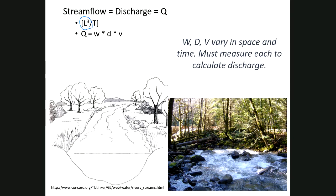If you have a rectangle channel, measuring width and depth isn't such a big deal. But even a simple channel looks more irregular, and real channels are often rocky with no single depth. The width varies as the channel fills and empties, and velocity varies depending on where you measure it and whether it's a sunny or rainy day. So we have to really get into the details of how to measure depth and velocity in order to calculate discharge.